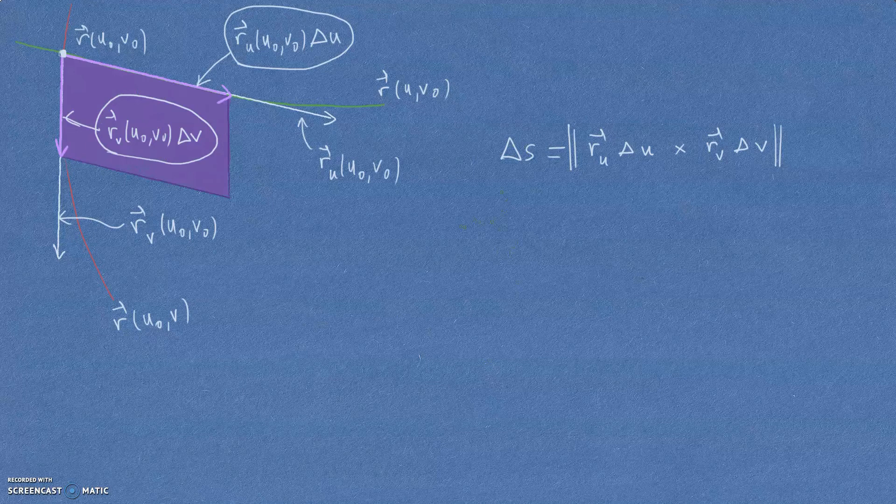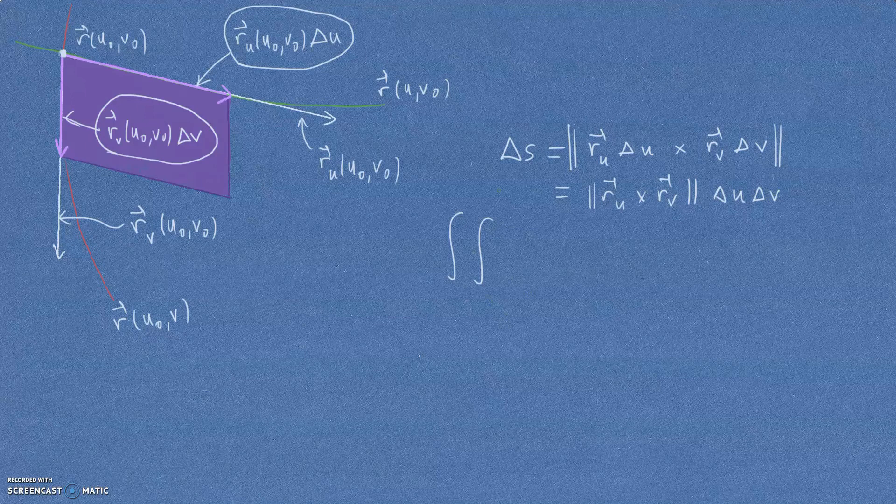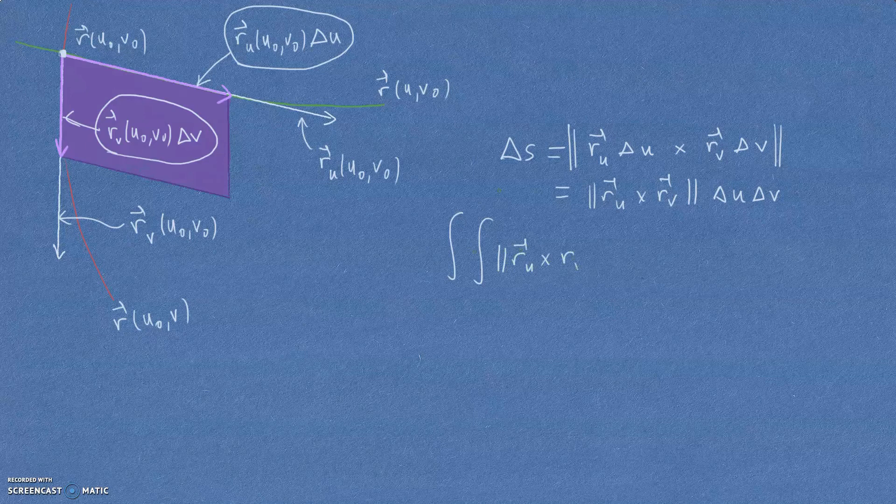So it's a pretty simple idea once we've gotten down to that to find the total area of our surface, then we should integrate, right? We should add up these little pieces. Of course, now, one thing I can do with this is I can factor out from the cross product the delta U and the delta V. Those are scalar quantities that can be factored out. So that's what goes into here. R_U cross R_V.